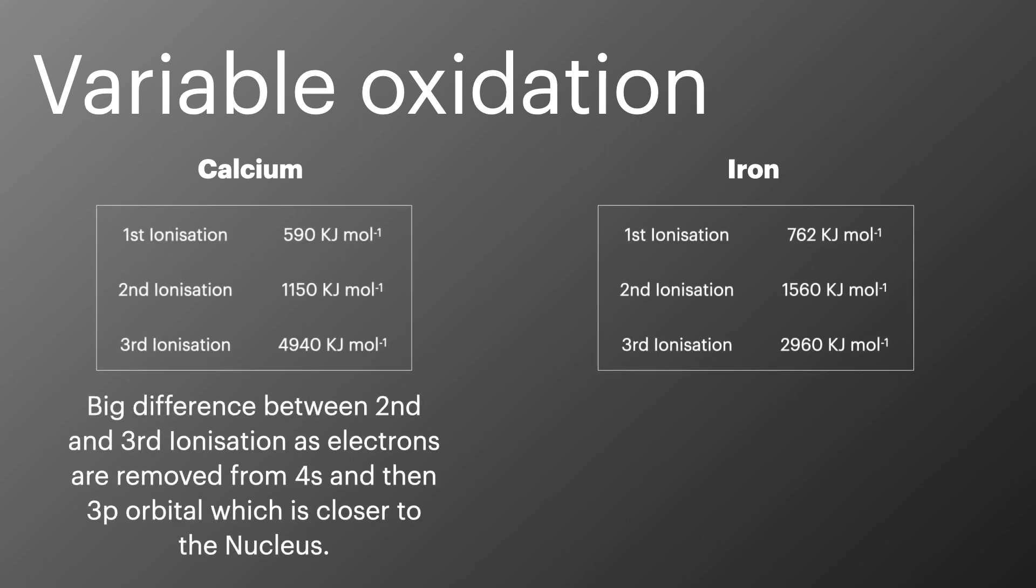Calcium normally forms two plus ions and you can see a big jump between the second and third ionization energies. Electrons are removed first from the 4s orbital for the first and second ionization energies and then the third electron is removed from the 3p orbital which is much closer to the nucleus so much harder to remove which results in this much higher ionization energy.